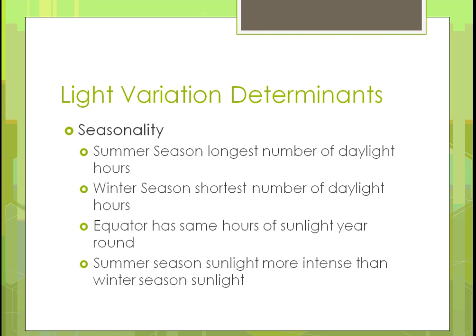For seasonality, summer has the longest daylight hours, allowing plants to grow best, though summer varies between hemispheres — when one side has summer, the other has winter. Winter has the shortest daylight hours. At the equator, hours of sunlight remain constant year-round with no seasonal change. Sunlight is more intense during summer because the sun is more directly overhead; in winter it's at an angle, making it less intense.